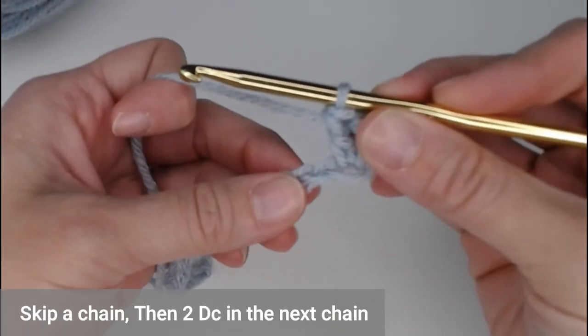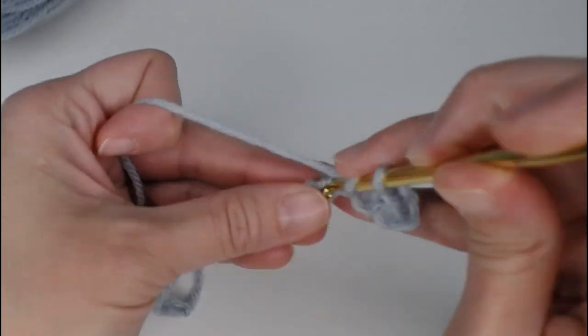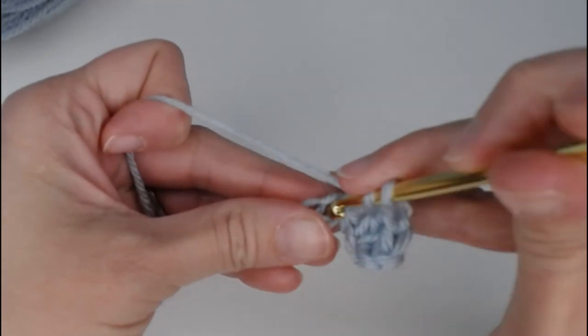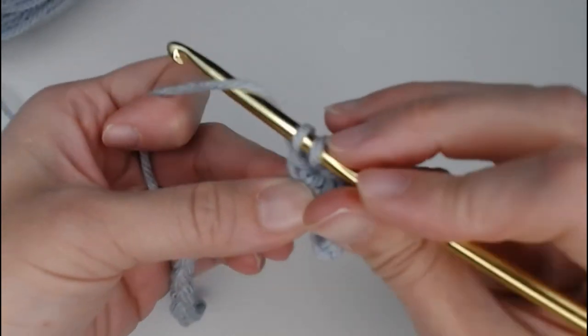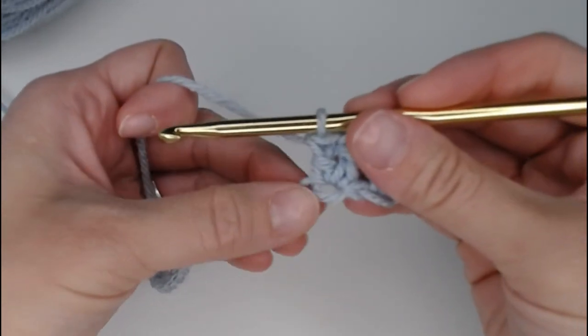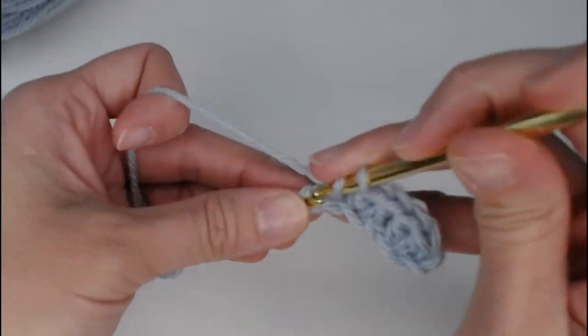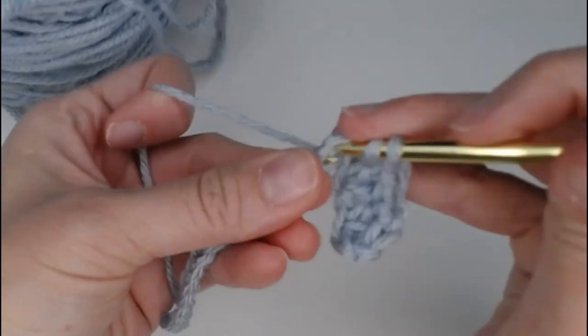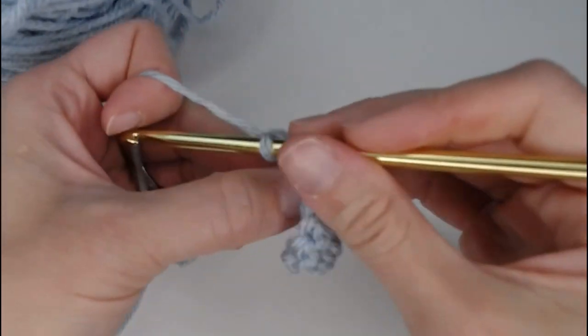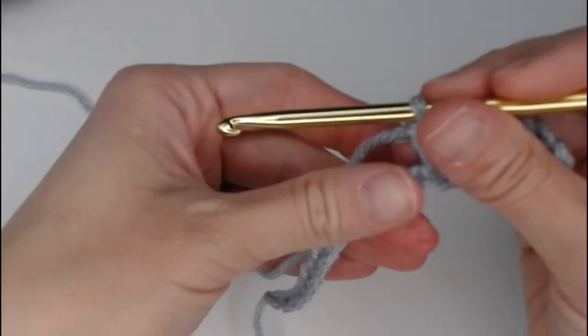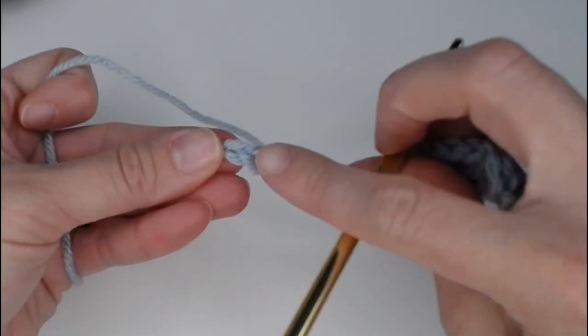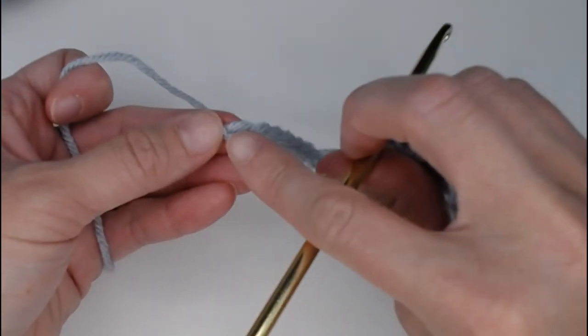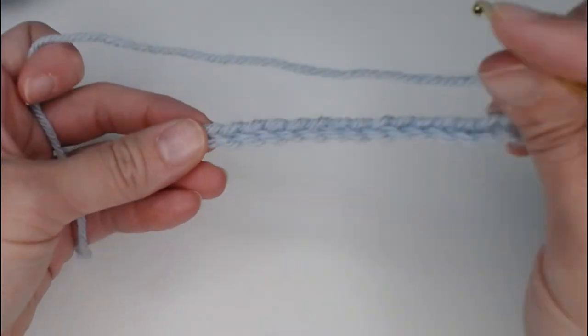Then skip a chain and 2 double crochets in the next chain. And then skip a chain and 2 double crochets in the next chain. And you just repeat that pattern all the way to the end of your chain. And you will actually be putting 2 double crochets in the very last chain. So, I will go ahead and meet you at the very last chain to show you what to do next.